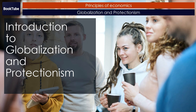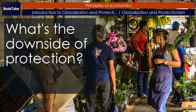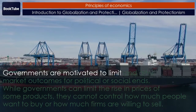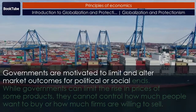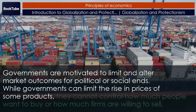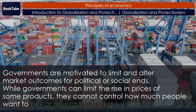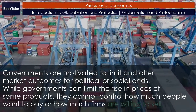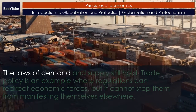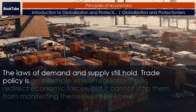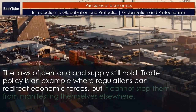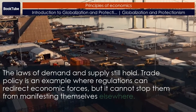Introduction to Globalization and Protectionism. What's the downside of protection? Governments are motivated to limit and alter market outcomes for political or social ends. While governments can limit the rise in prices of some products, they cannot control how much people want to buy or how much firms are willing to sell. The laws of demand and supply still hold. Trade policy is an example where regulations can redirect economic forces, but it cannot stop them from manifesting themselves elsewhere.